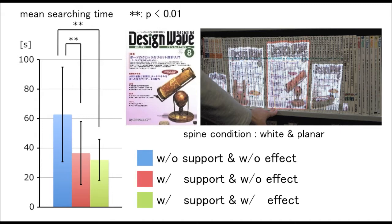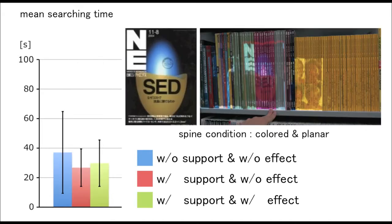When the spines were colored, and the legibility of the projected image content was strongly degraded, it was confirmed that the proposed support technique neither improved nor worsened the book searching task, when the spines were photometrically not suitable for projection.